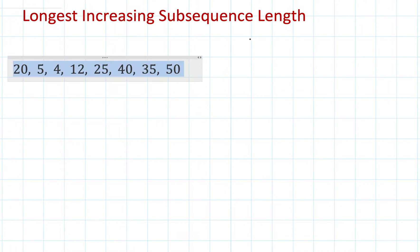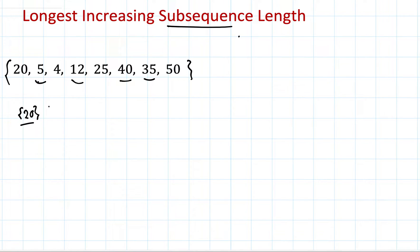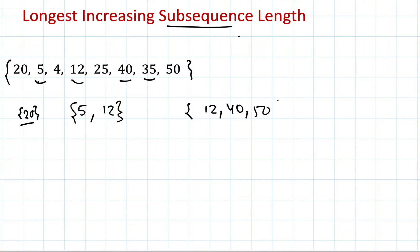In this video we are going to see how to find the length of the longest increasing subsequence in a given array. First, let's understand what a subsequence is. A subsequence is a sequence that maintains the same order as in the given array. For example, 20 is a subsequence; 5 and 12 is also a subsequence; and 12, 40, 50 is another subsequence. Their order has to be maintained.